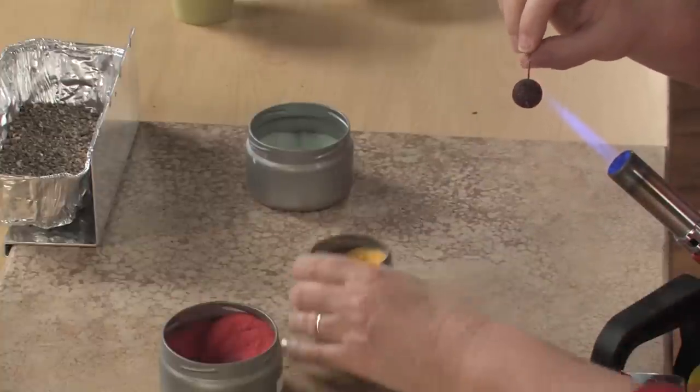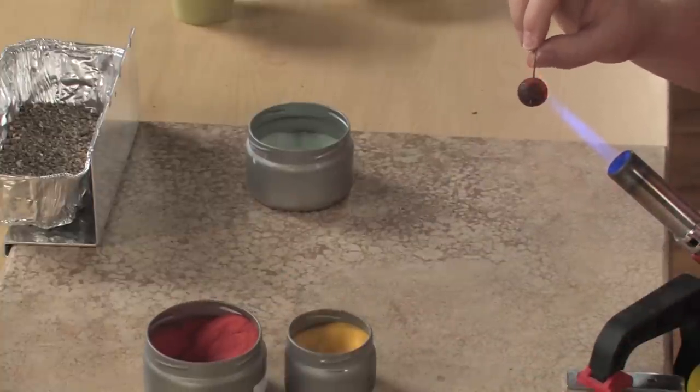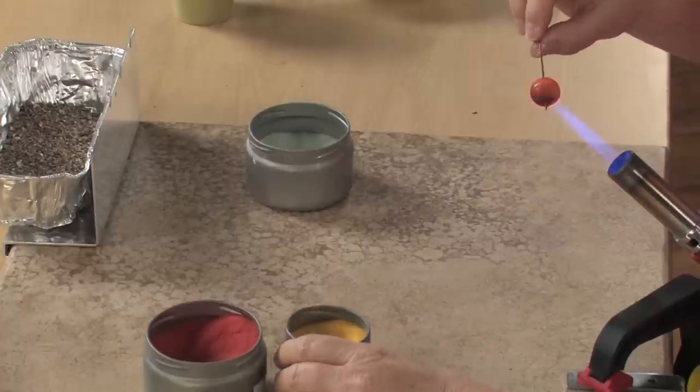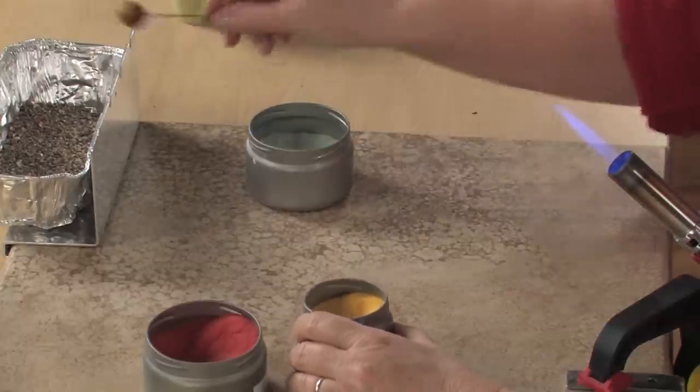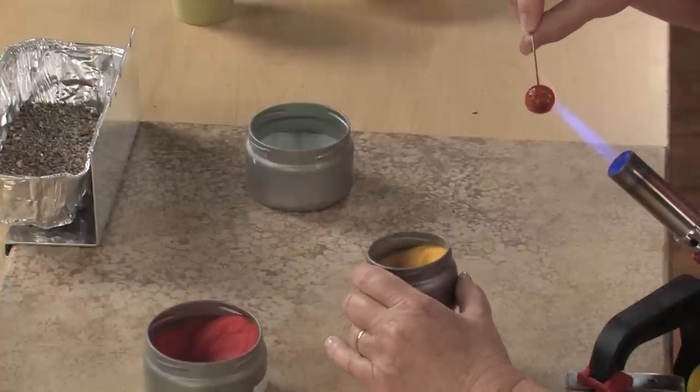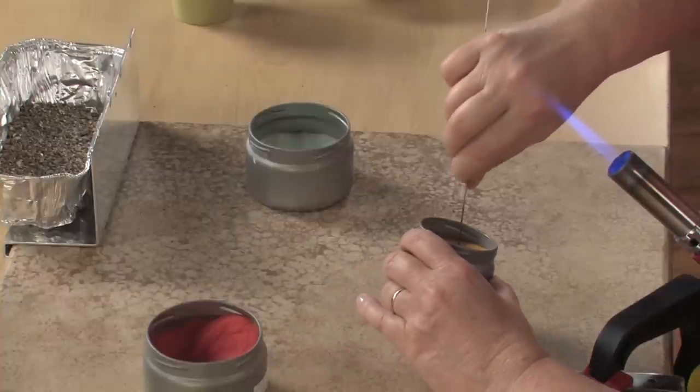Okay, so we have three coats of Orient Red on the bead right now, and now we're going to put goldenrod on top of that, on half of the bead, and we're going to do that by going in perpendicular to the bead.